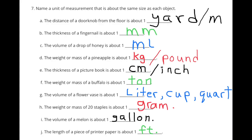e) The thickness of a picture book is about 1 centimeter or 1 inch. f) The weight or mass of a buffalo is about 1 ton. g) The volume of a flower vase is about 1 liter, a cup, or a quart, depending on the size of the vase. h) The weight or mass of 20 staples is about 1 gram. i) The volume of a melon is about 1 gallon. j) The length of a piece of printer paper is about 1 foot.